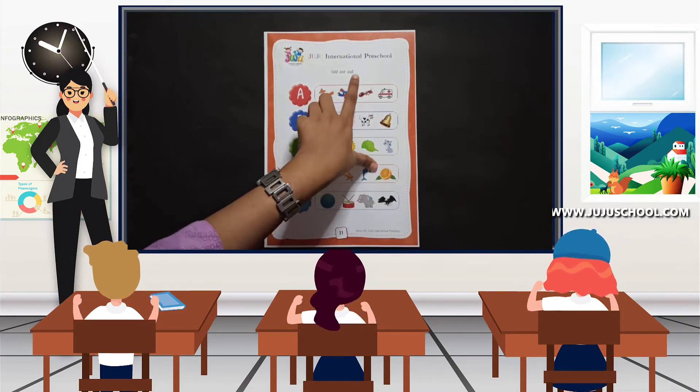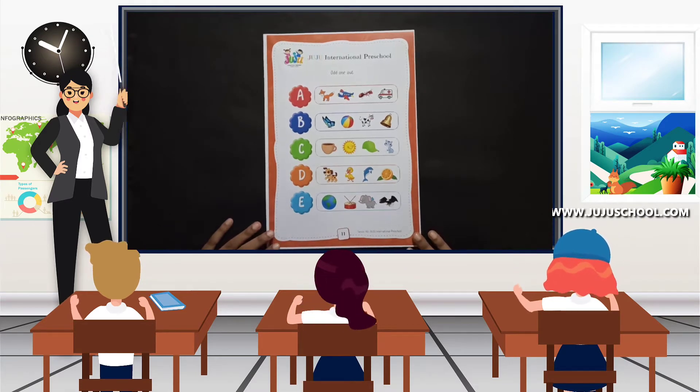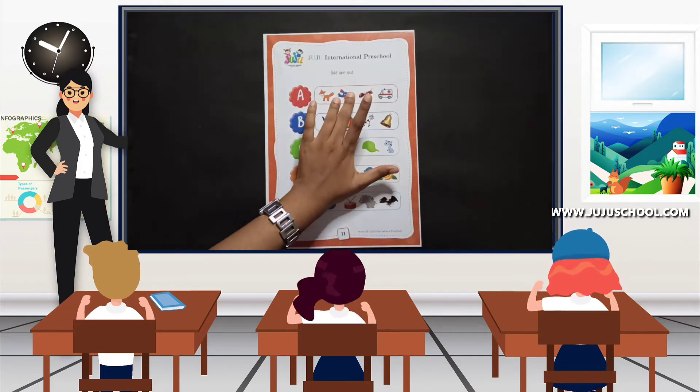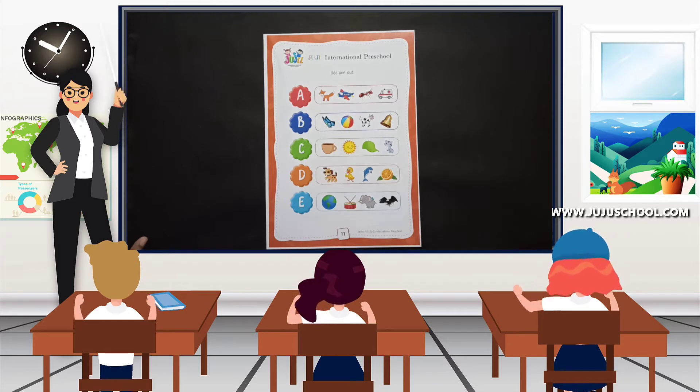Today we are going to make an activity like odd one out. That is, we are going to circle the odd one in this activity. Can you understand, right?